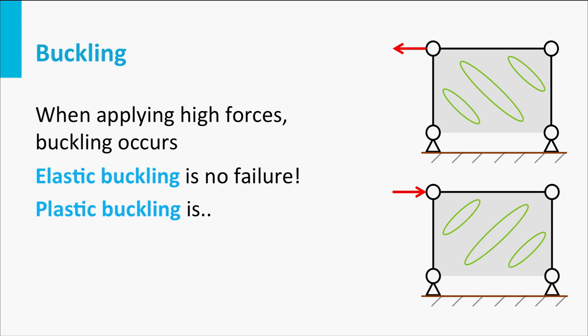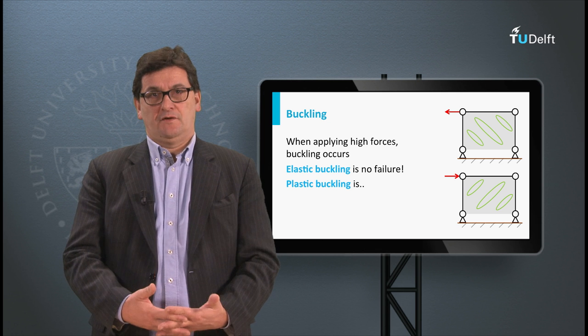The orientation of the buckles depends on the direction of the loads. And, as with the paper, as long as the buckles are elastic they will disappear when the beam is unloaded. If the load has become too high the buckles will become plastic and they will not disappear when the load is removed. Actually, our structure has failed.